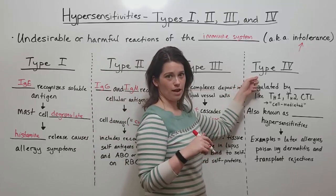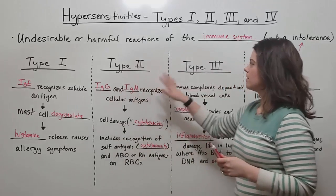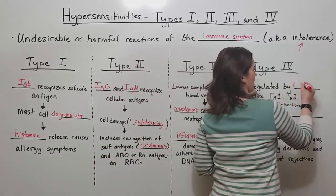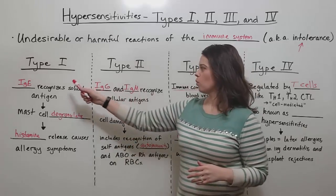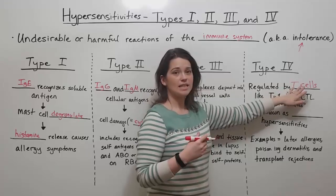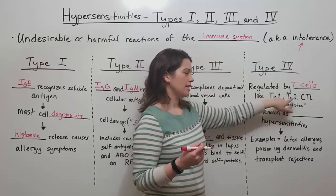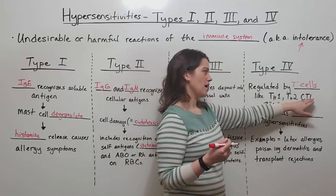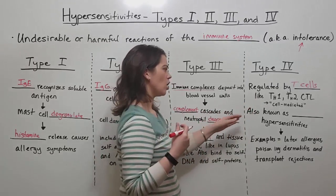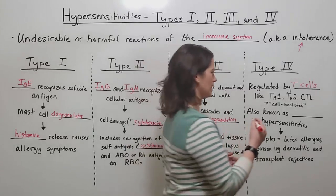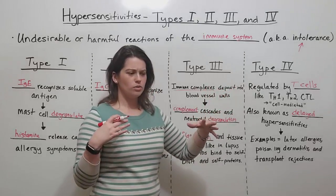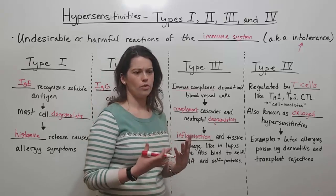Now let's move on to the final type, type 4. Type 4 is different from the first three because it is cell mediated — regulated by T cells. Whereas types 1, 2, and 3 all involved antibodies causing harm to the host, type 4 is about T cells doing something wrong. The T cells can be Th1 or Th2 helper cells, or cytotoxic lymphocytes. Either way, it's cell mediated rather than antibody mediated, and it's also known as delayed type hypersensitivity. The T cells attack something that otherwise shouldn't be harmful in order to eliminate it.